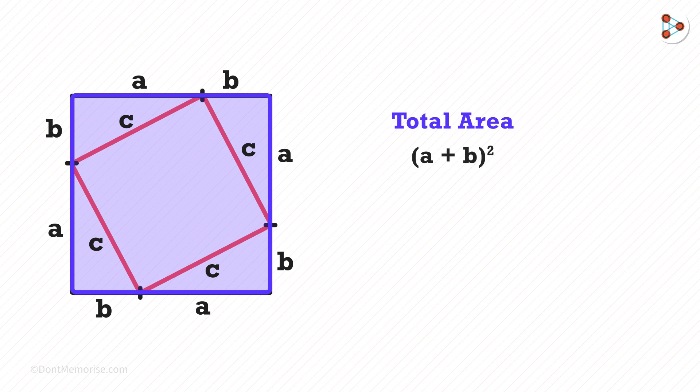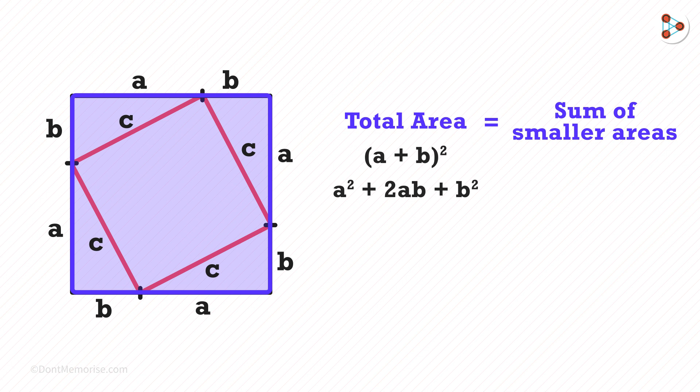The total area of the outer square will be (a + b)², which will be a² + 2ab + b². And we know that the total area will be equal to the sum of the smaller areas. So inside there are five areas.